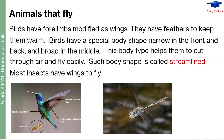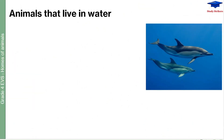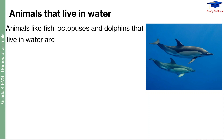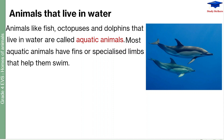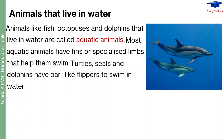Animals like fish, octopuses, and dolphins that live in water are called aquatic animals. Most aquatic animals have fins or specialized limbs called flippers that help them swim. Turtles, seals, and dolphins have flipper-like limbs to swim in the water.